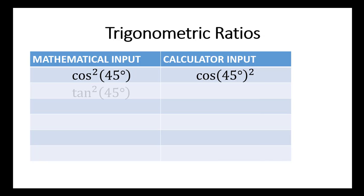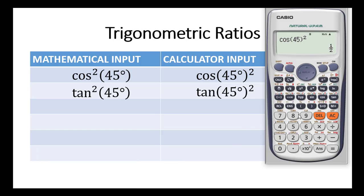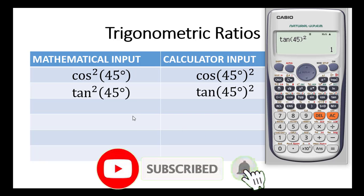And you will proceed to the next one, which is tan squared 45 degrees. In your calculator, you key in tan 45 degrees, close the bracket, and then introduce the exponent 2. So you press tan, key in 45, close bracket, then exponent 2, and press equal to. You have 1.